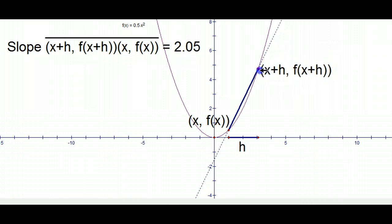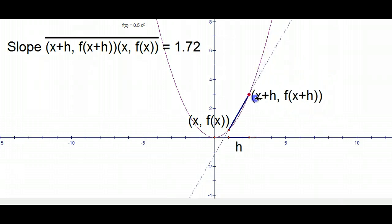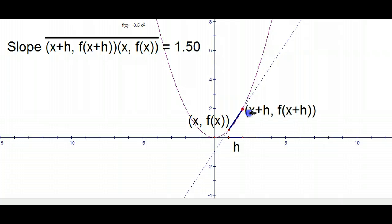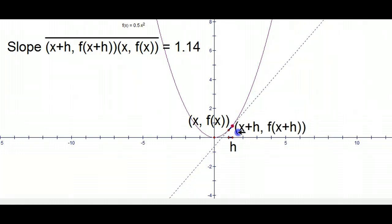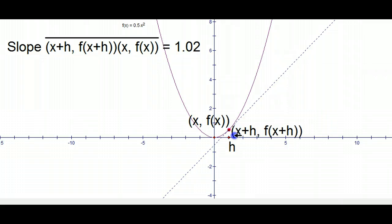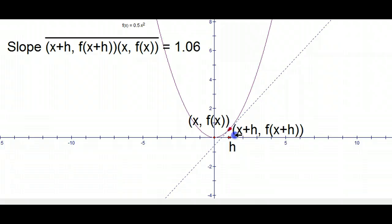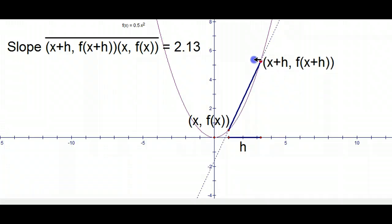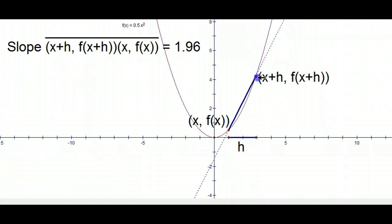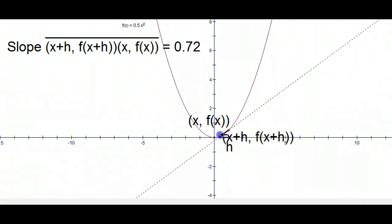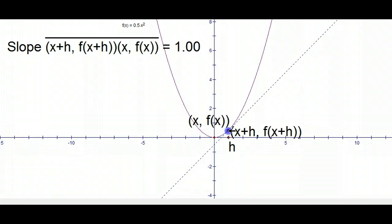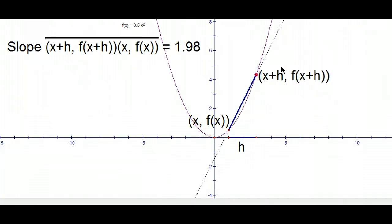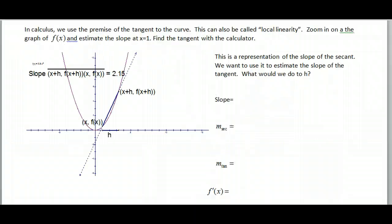With this secant line, the whole idea is to get the slope of the actual tangent line. What I can do is bring the secant line in: H is getting smaller and smaller. As H goes to zero, I end up with a tangent line that just intersects the curve at one point — that's local linearity. It doesn't matter which side I approach from; as H goes to zero, this gives me the slope of the tangent line.